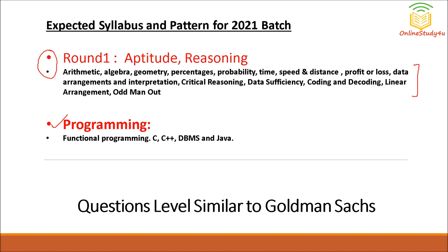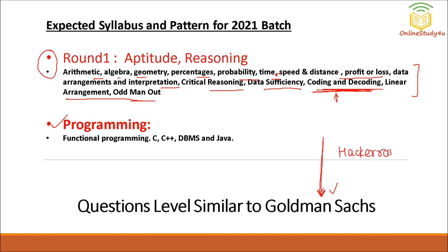Now talking about the syllabus — for aptitude and reasoning, you can similarly compare with Goldman Sachs. The topics include arithmetic, algebra, geometry, percentage, probability, time, speed and distance, profit and loss, data arrangements and interpretation, critical reasoning, data sufficiency, coding and decoding, linear arrangement, and odd man out. The best way to prepare for the PayPal exam is to refer to the recent Goldman Sachs questions, since HackerRank is conducting both.